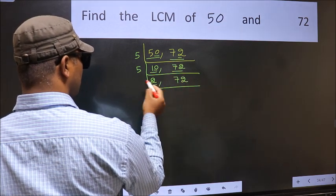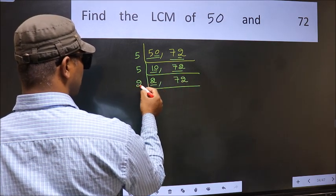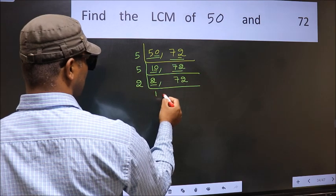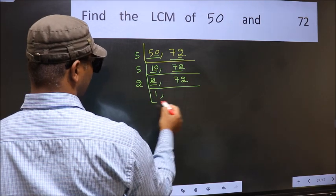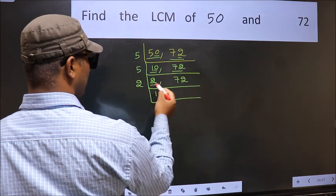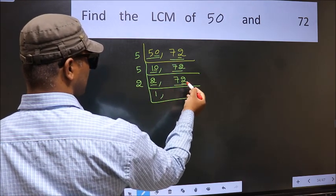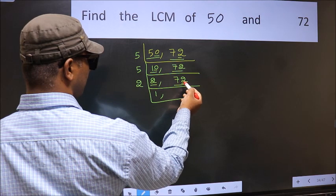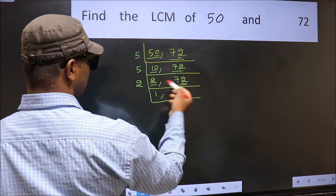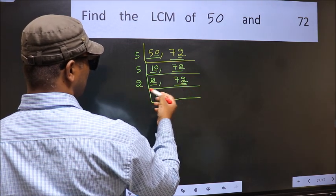Now we have 2. 2 is a prime number, so 2 times 1 is 2. The other number 72 — last digit is 2, which is even, so it is divisible by 2.